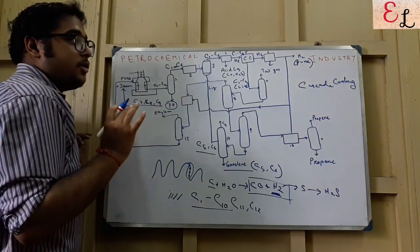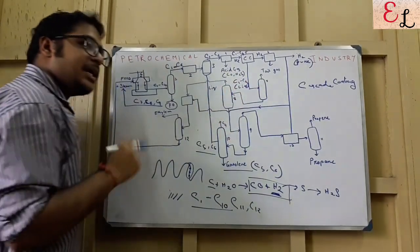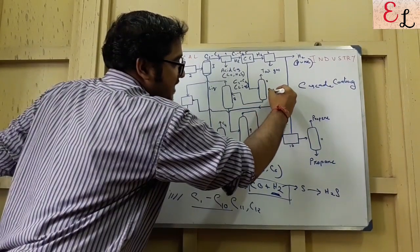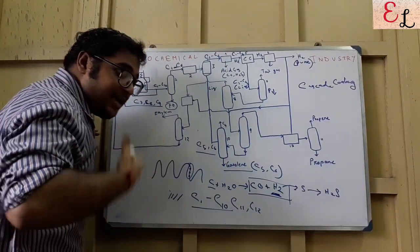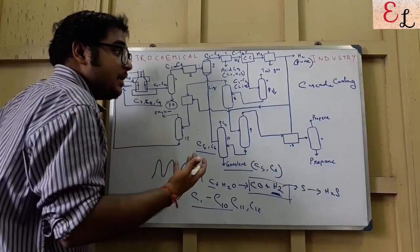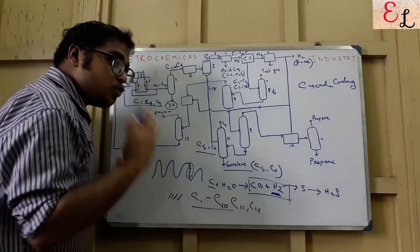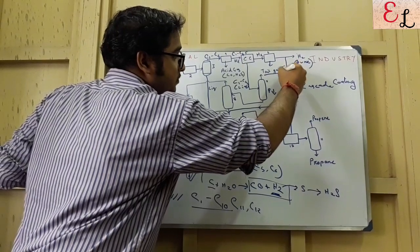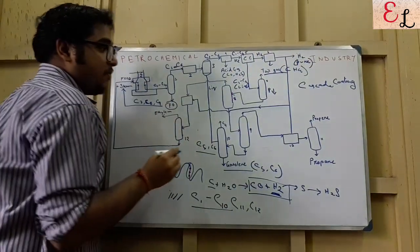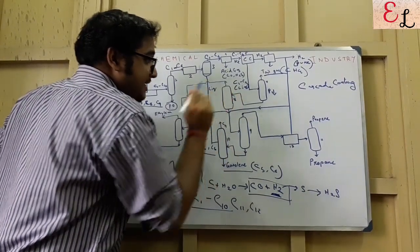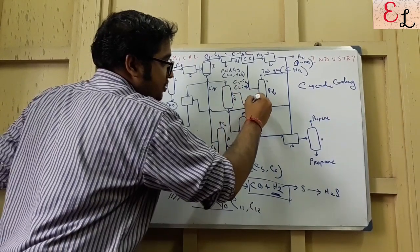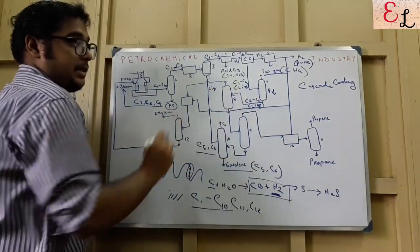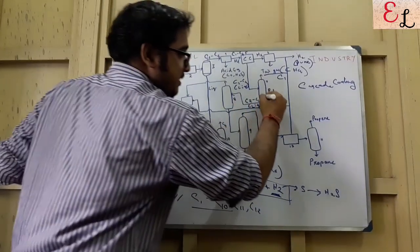C1 to C4 in the completely liquefied state is fed into the de-methanizer, where the pressure is slightly depressed. As soon as the pressure is slightly depressed, C1 — methane — having a tendency to readily convert into vapour, converts into vapour, whereas C2 to C4 remain as liquid. The tail gas that comes out is methane (CH4), and C2 to C4 in the liquid state move forward, as C1 is removed as tail gas from the de-methanizer.